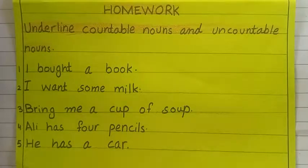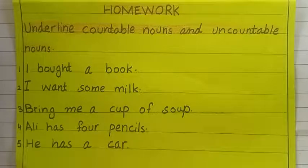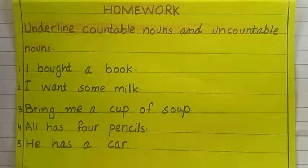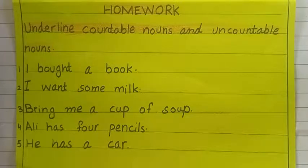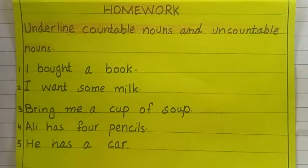After that, you have homework and you will do it yourself in your neat copies. You will underline the countable nouns and uncountable nouns. You will write 'countable noun' or 'uncountable noun' on top of the word and underline it as well. Like: 'I bought a book' — you will mention whether it is a countable noun or uncountable noun. 'I want some milk.' 'Bring me a cup of soup.' 'Ali has four pencils.' 'He has a car.' This is your homework. You will do it at home in your neat copy. Hope this lecture will help you to do your work at home and you will learn these things easily.